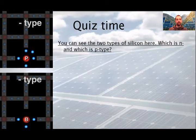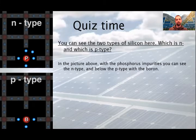After finishing the basics, it's time for a short quiz. You can see the two types of silicon here, which is N and which is the P type. In the picture above, with the phosphorus impurities, you can see the N type and below the P type with the boron.